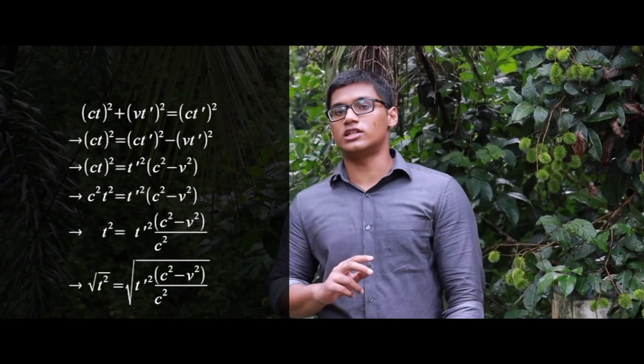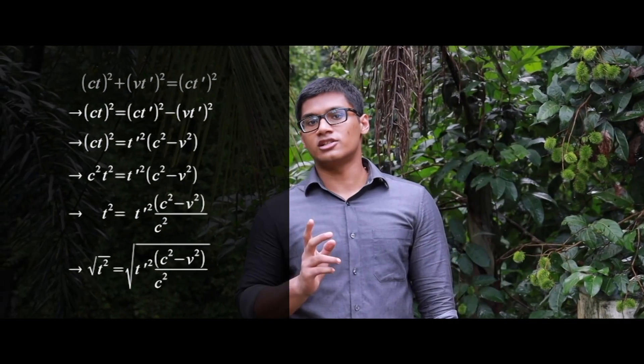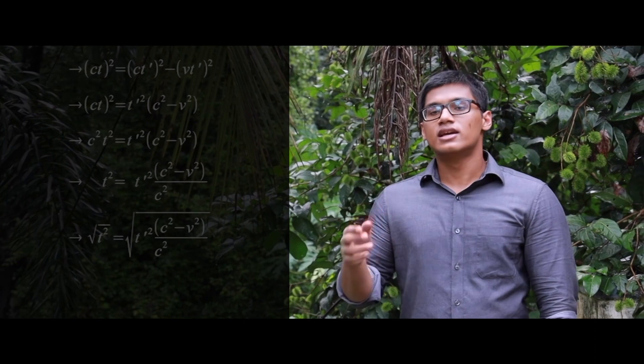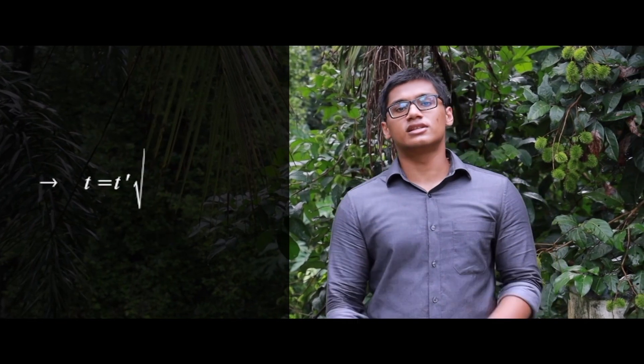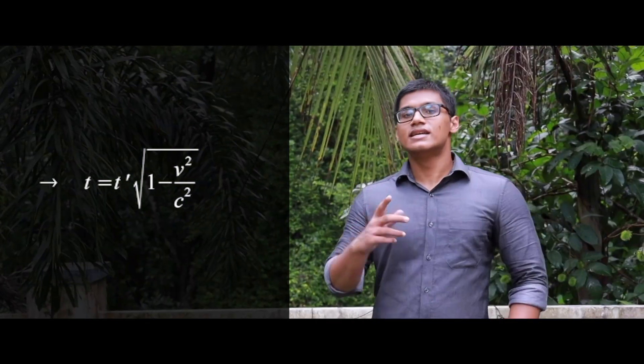When solving this equation for t using algebra, we get that t equals t prime into the square root of (1 minus V² / c²). Here, t is the time for a moving body and t prime is the time for its surroundings. That's it — we got the equation for the relation between time for a moving body and its surroundings.